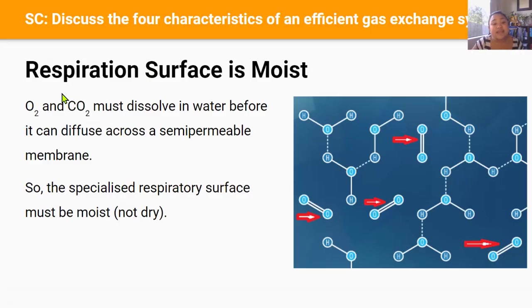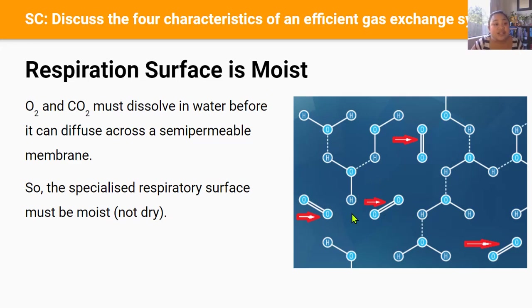Now let's look at the second characteristic of an efficient gas exchange system: moisture. For gas exchange to happen, oxygen and carbon dioxide must first dissolve in water or a watery solution before they can diffuse across a semi-permeable membrane and into a cell. So the specialized respiratory surface needs to be moist and not dry. For fish, water in the ocean already contains dissolved oxygen, so fish don't have to worry about creating moisture in their gas exchange system because they're already fully submerged in water.